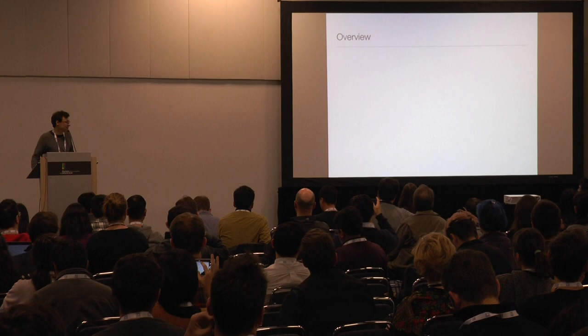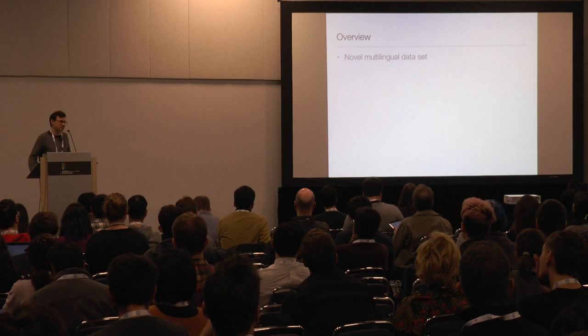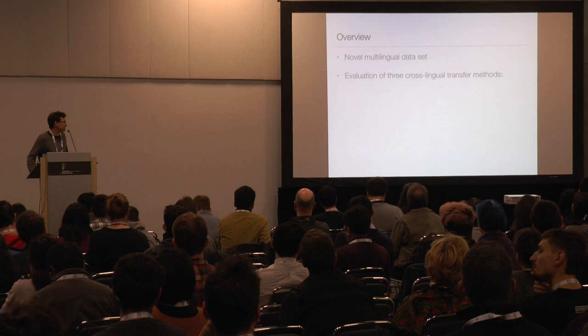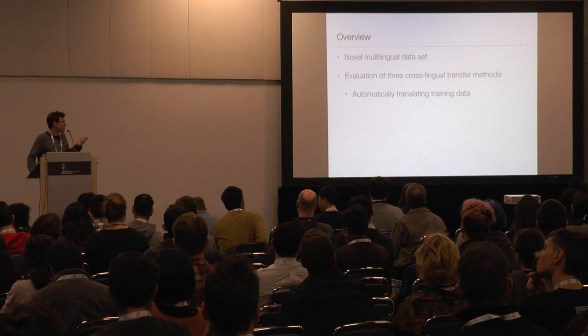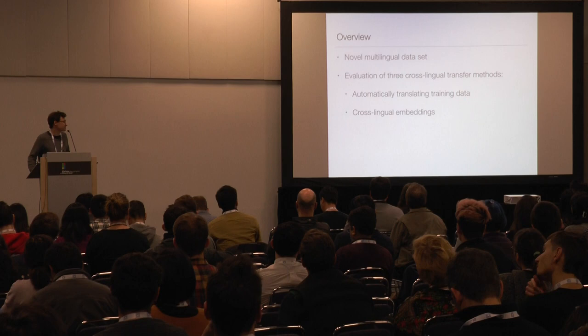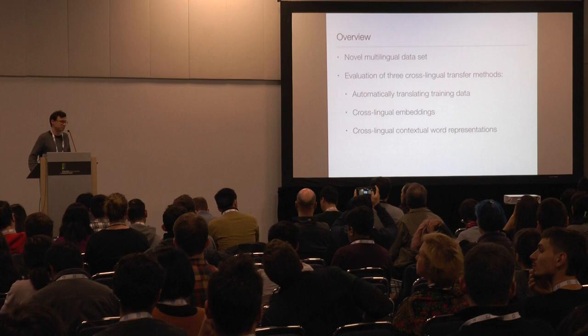That work mainly consists of two parts. First, we collected a novel multilingual dataset, which I'm going to talk about in a second. Then we evaluated three cross-lingual transfer methods. Two of them had been proposed before: one is to automatically translate the training data, and the second is to use cross-lingual embeddings. We also present a new method using cross-lingual contextual word representations.